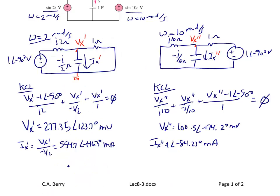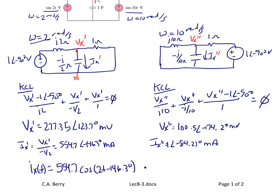It is important to understand that since these values were found at two different frequencies, unlike DC superposition problems, you cannot simply add the two phasor values together. One was at omega equals 2 radians per second and the other at omega equals 10 radians per second. The correct final answer is written in the time domain: Ix = 554.7 cos(2t − 146.3°) + 1000 cos(10t − 84.23°) milliamps.